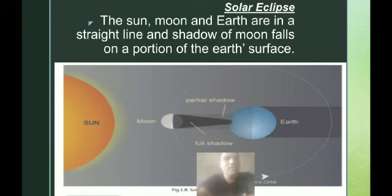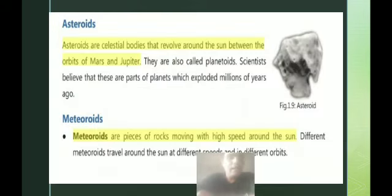Other celestial bodies such as asteroids and meteoroids. Asteroids are celestial bodies that revolve around the sun between the orbits of Mars and Jupiter. They are also known as planetoids and are also considered part of planets.